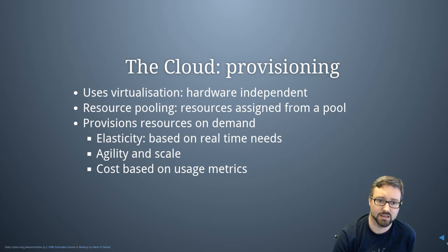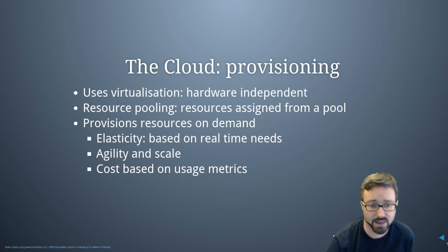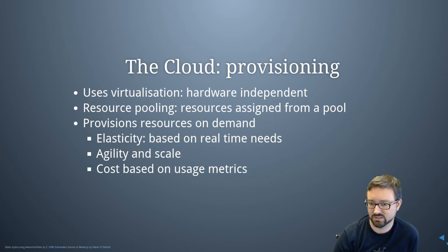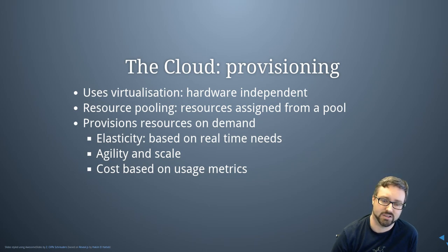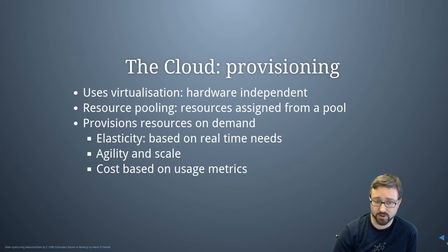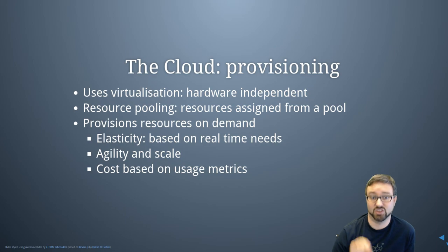A business that suddenly needs to meet twice as much demand might just foot the bill to have twice as much server capacity — and if they're using a third-party provider, they don't need to make that infrastructure investment; they just pay more and suddenly have more resources. Usually it's cost based on usage metrics, calculated quite fine-grained, to the point where if you're not using a VM, you shut it down because you're paying for every minute it's running.